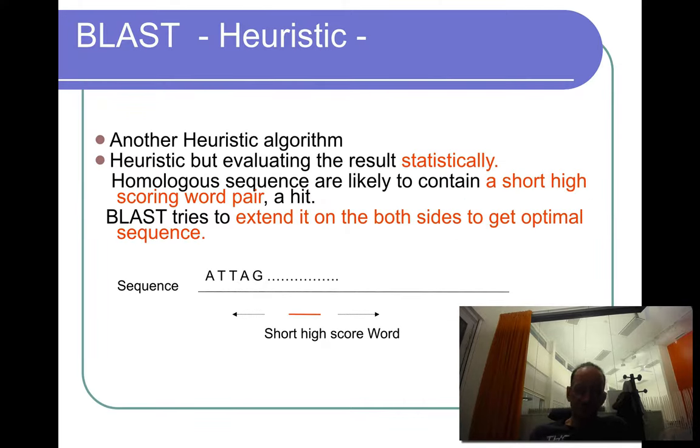However, there are a number of differences. The main thing is that it uses statistical evaluation. The whole idea here is that homologous sequences are likely to contain not only identical regions, but at least short, high-scoring pairs of words, pairs of regions of sequences, which we call a hit.